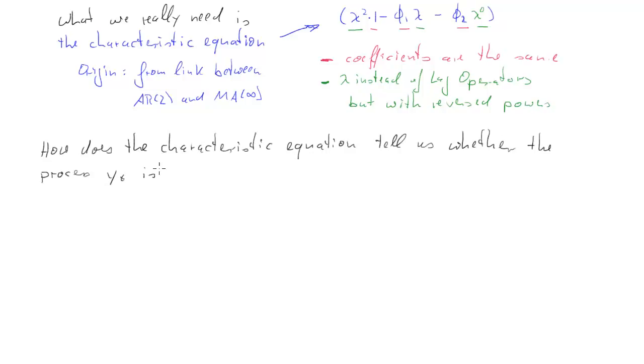Now, how does that characteristic equation, or so far it's not an equation, tell us whether the process is stable or not? So that I haven't told you yet. This is done as follows.